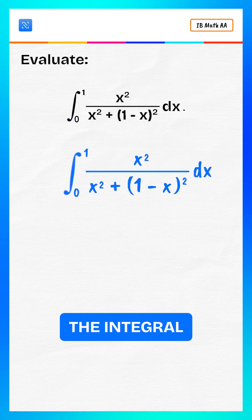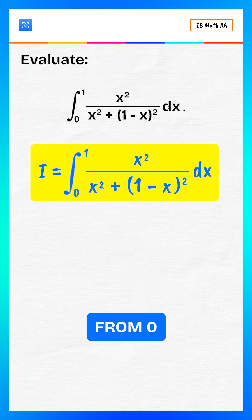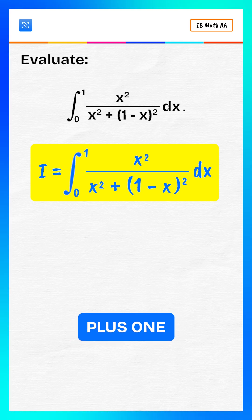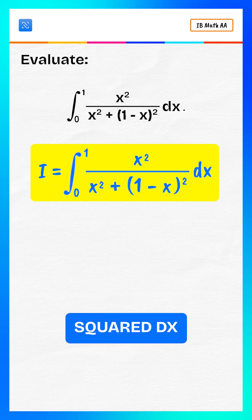First, define the integral. Let i equals integral from zero to one of x squared divided by x squared plus one minus x whole squared, dx.